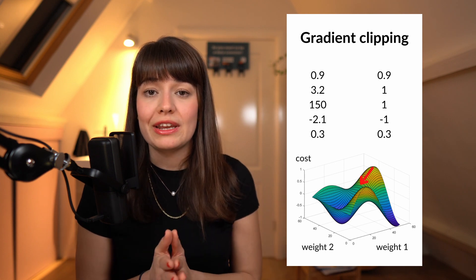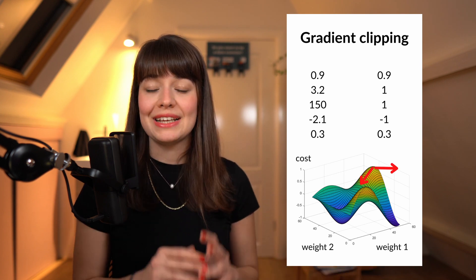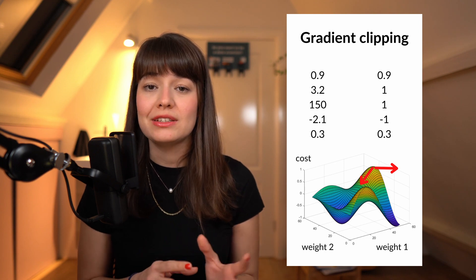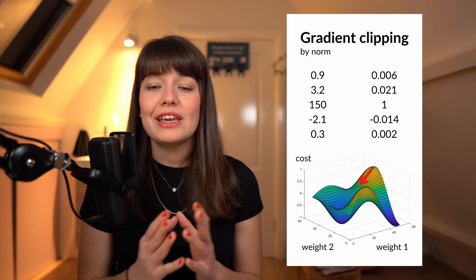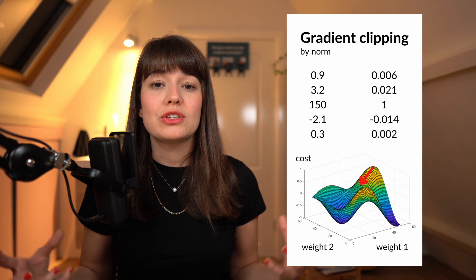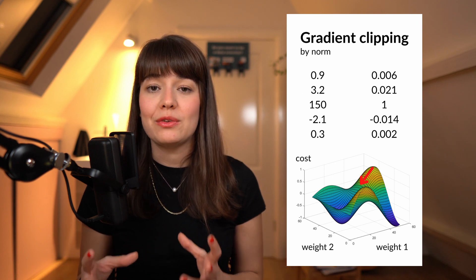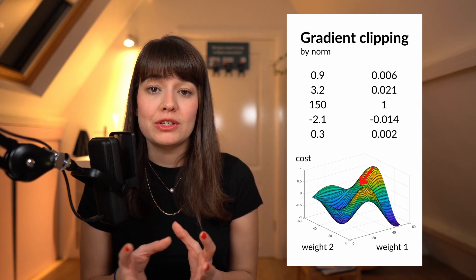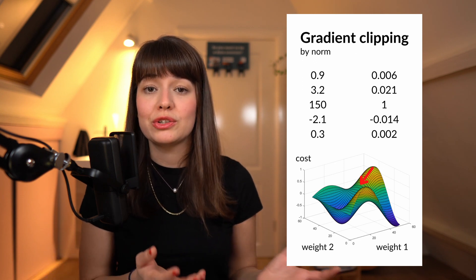Something you can do to maintain the direction of the gradient is what we call clipping by norm. Instead of only clipping the values that are outside of the range you're aiming for, you lower all of your gradient values — all of the values in your gradient vector — to be between minus 1 and 1. This way, you're keeping the proportion of the numbers in your gradient vector and thus keeping the direction of your original gradient vector.